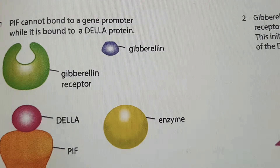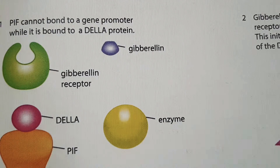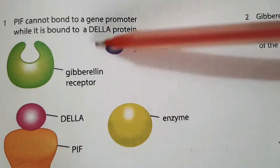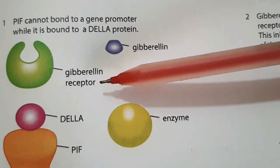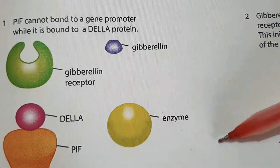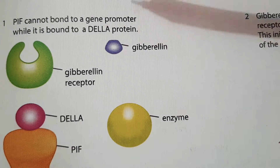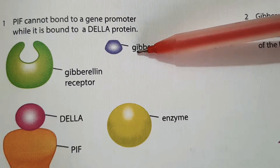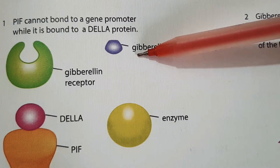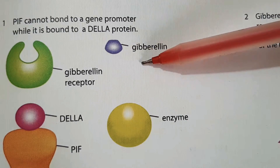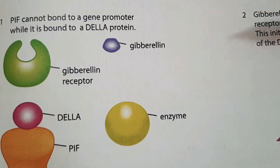Genes are expressed in the correct cell at the correct time and to the correct extent. You can see here in the diagram: this is the gibberellin receptor, this is the DELLA protein, this is PIF, and this is the enzyme. PIF cannot bind to a gene promoter while it is bound to the DELLA protein.